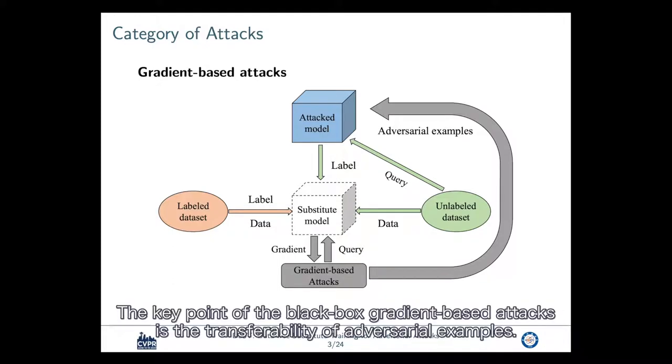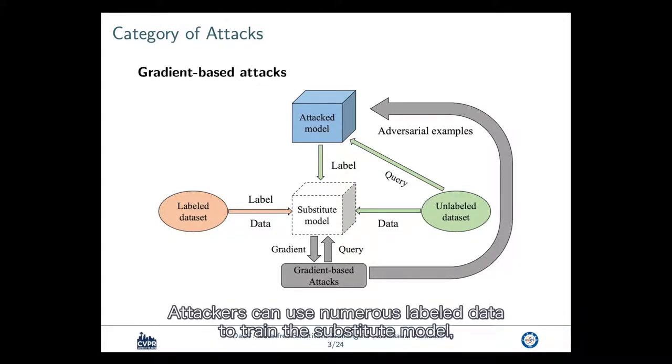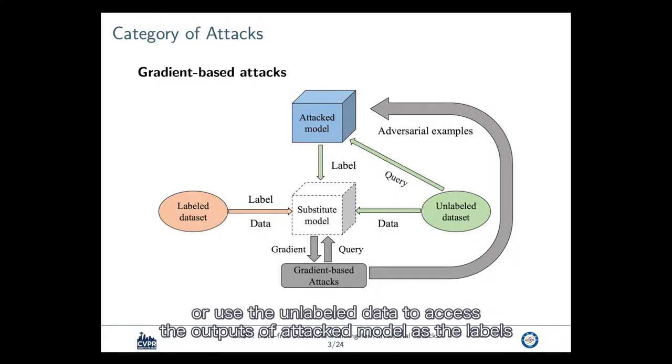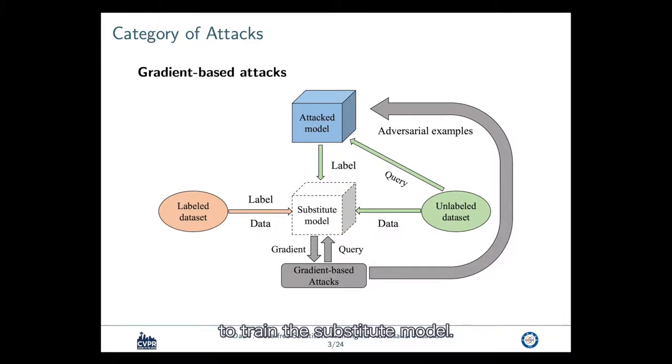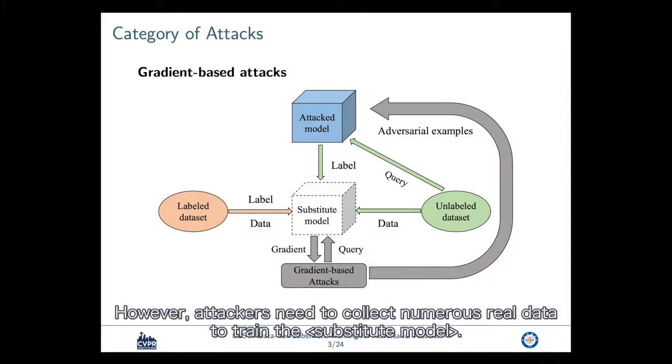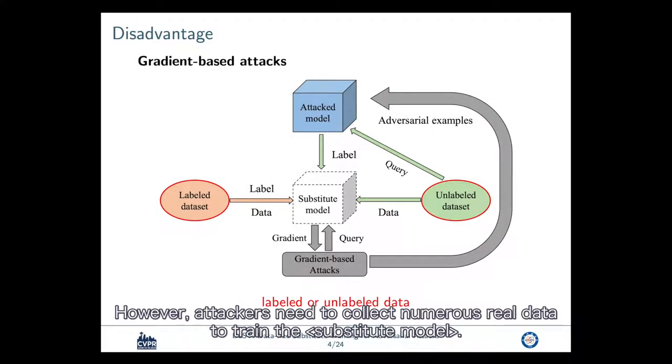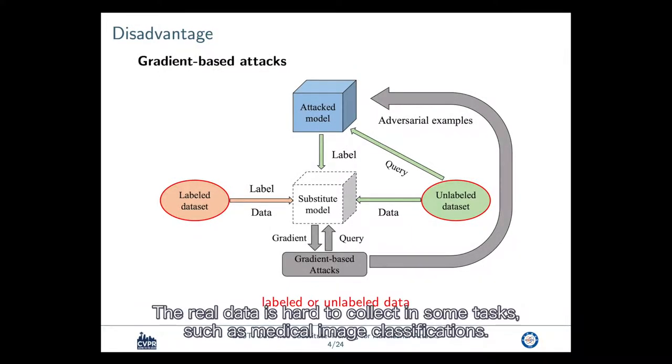The key point of the black box gradient-based attack is the transferability of adversarial examples. Attackers can use numerous labeled data to train the subsidial model, or use the unlabeled data to access the outputs of attacked model as the labels to train the subsidial model. However, attackers need to collect numerous real data to train the adversarial examples. The real data is hard to collect in some tasks, such as medical image classifications.